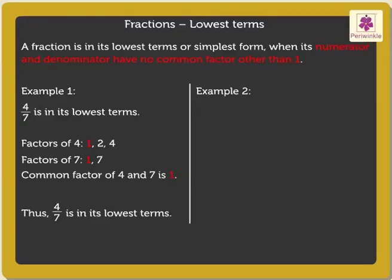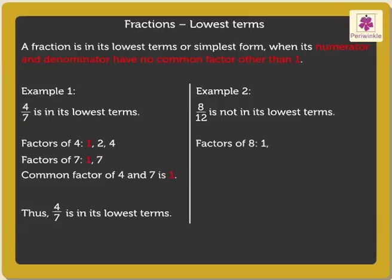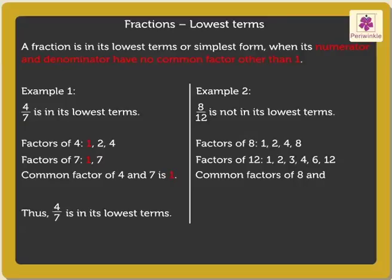Example 2: 8 upon 12 is not in its lowest terms. Let us see how. Factors of 8 are 1, 2, 4, and 8. Factors of 12 are 1, 2, 3, 4, 6, and 12. Here, the common factors of 8 and 12 are 1, 2, and 4. Thus, we say that 8 upon 12 is not in its lowest terms.